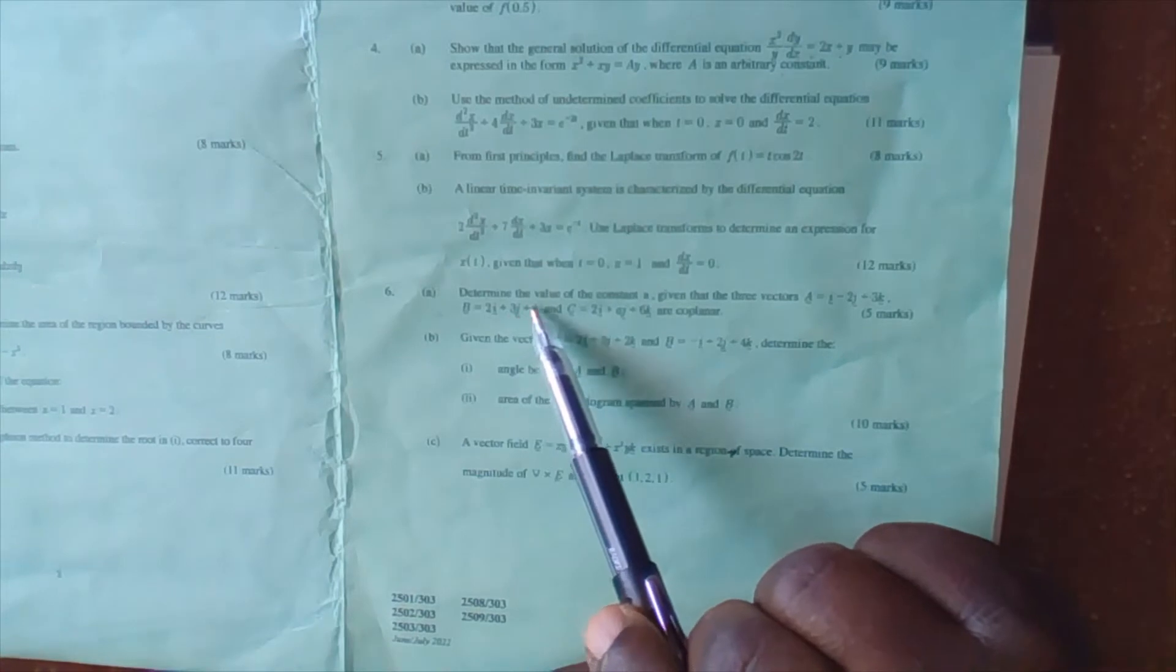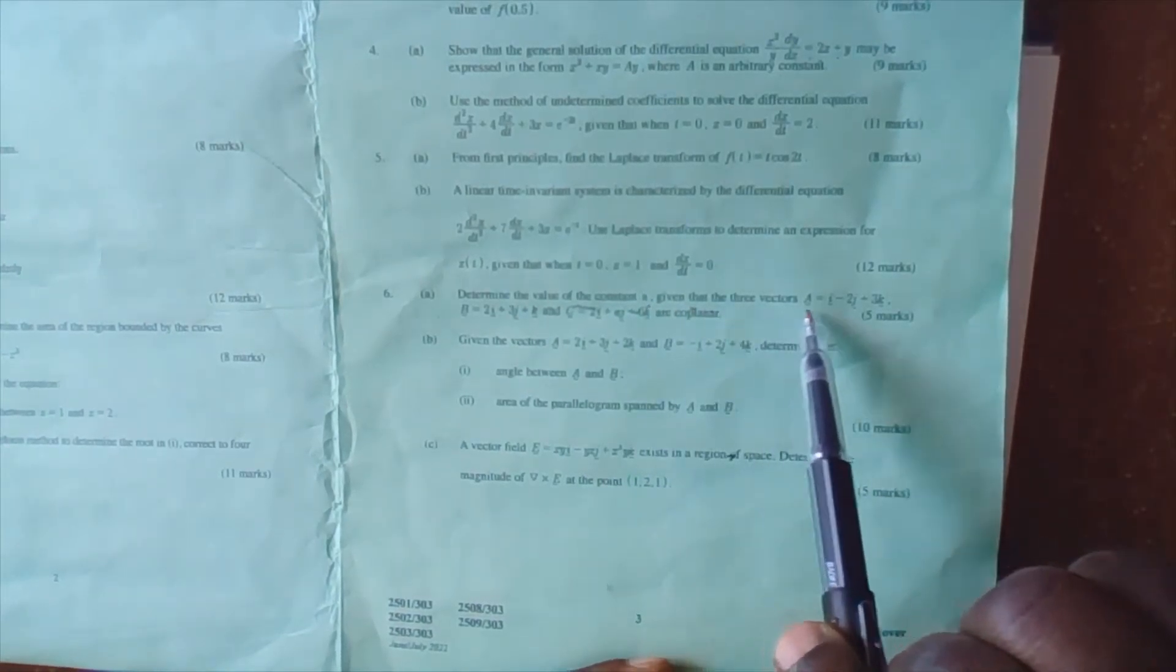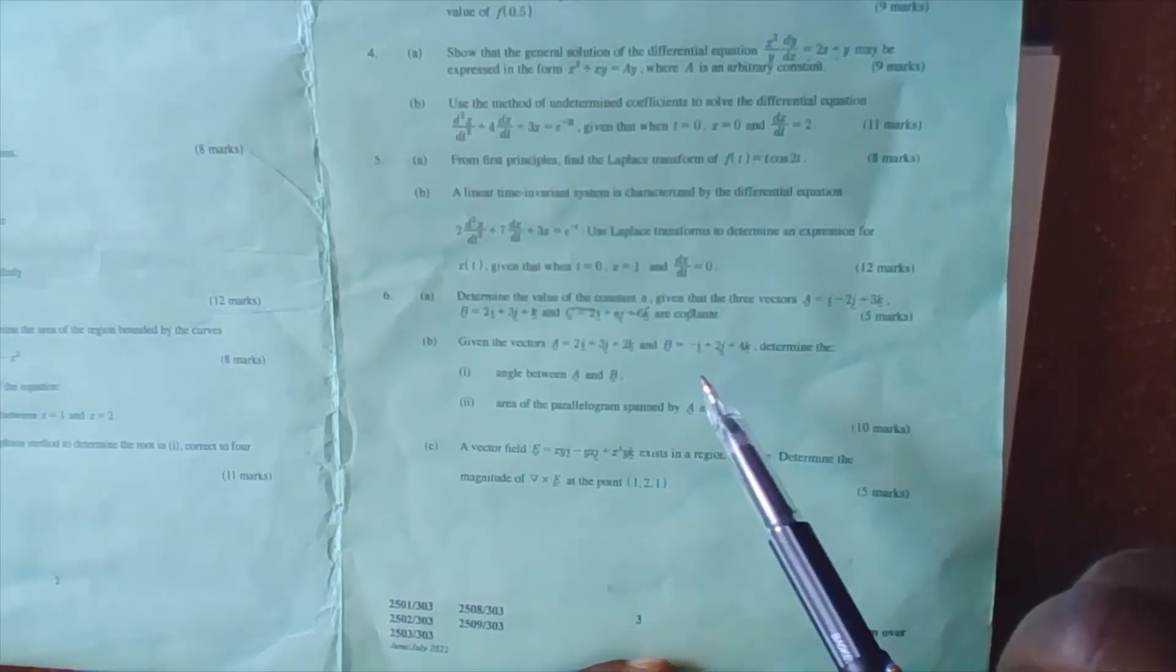Question 6a: Determine the value of constant A given that the three vectors A, B, C are coplanar.